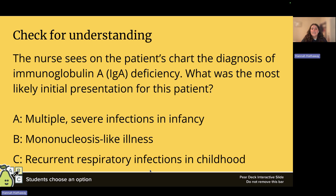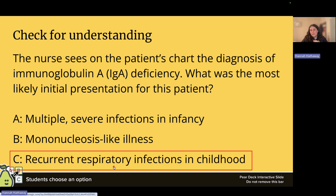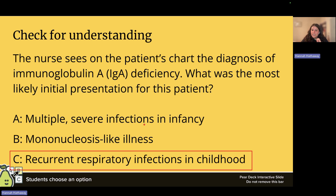Check for understanding: a nurse sees a patient diagnosed with immunoglobulin A deficiency — what was the most likely initial presentation? IgA is the first line of defense in the respiratory system and GI system, so the most likely presentation is recurrent respiratory infections, usually in childhood. Multiple severe infections would indicate SCID, and a mononucleosis-like illness could indicate an initial HIV infection — or it could simply be mono.